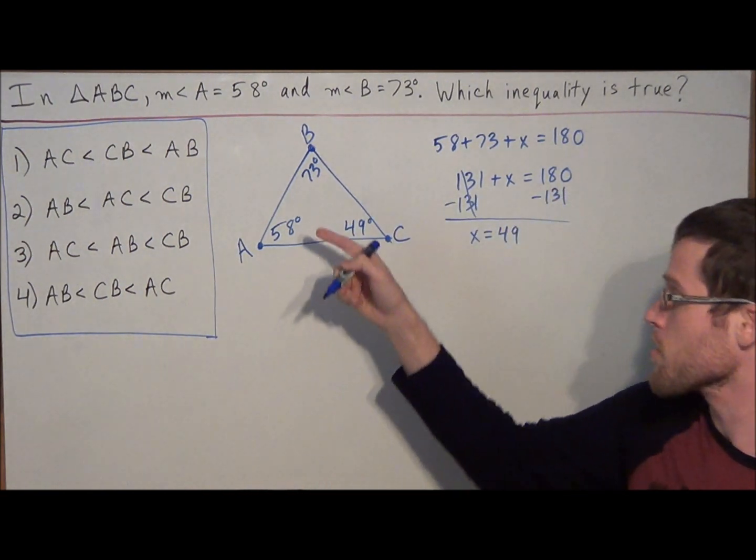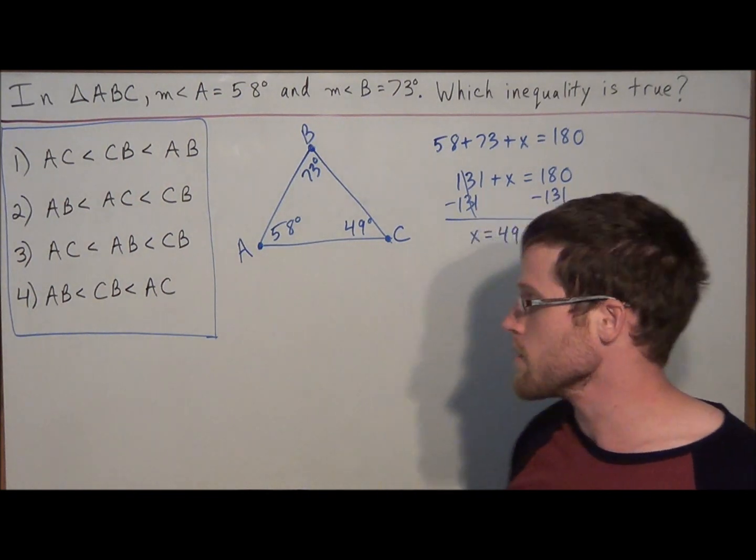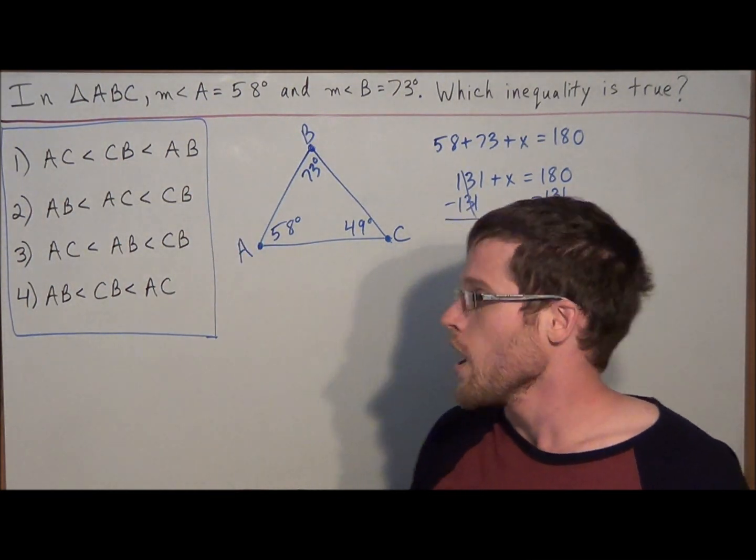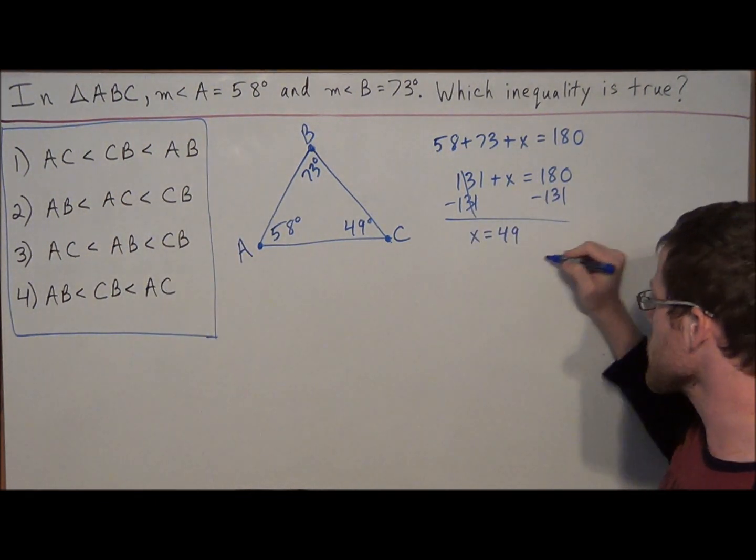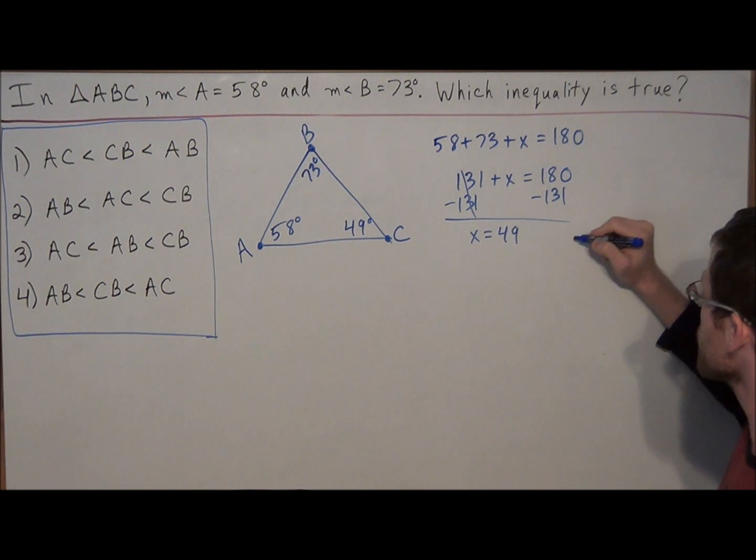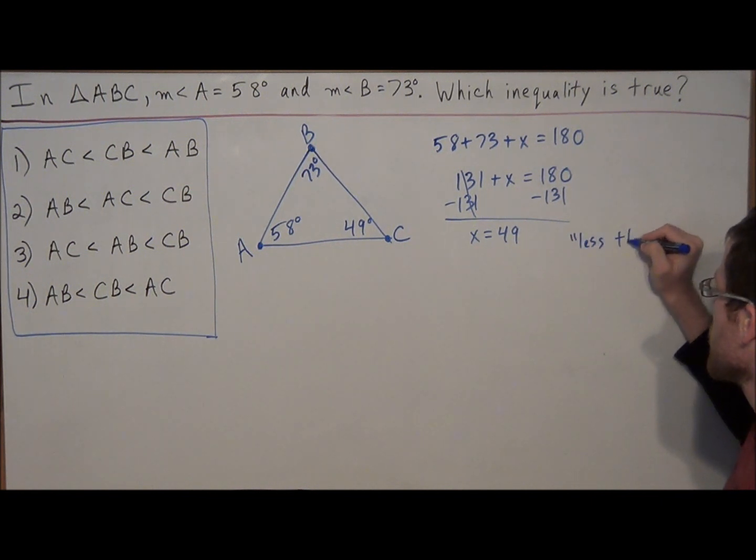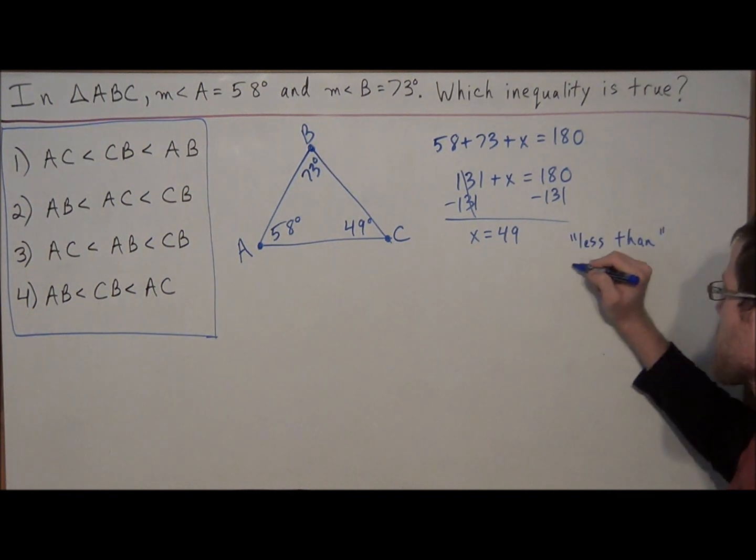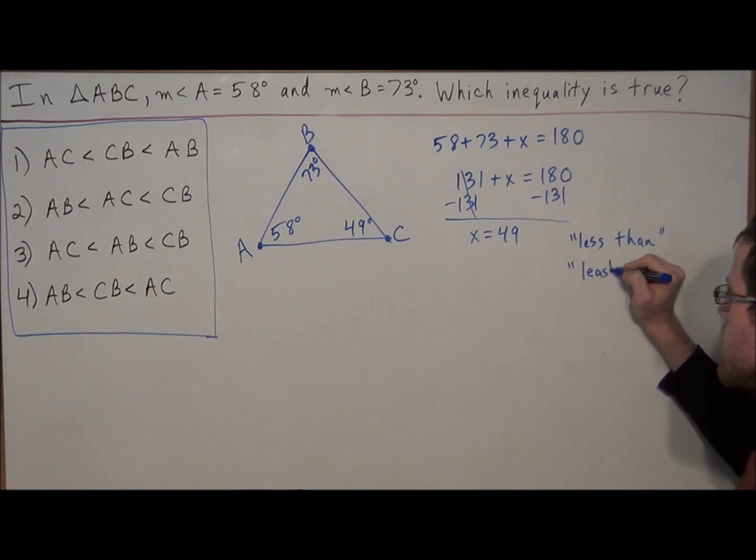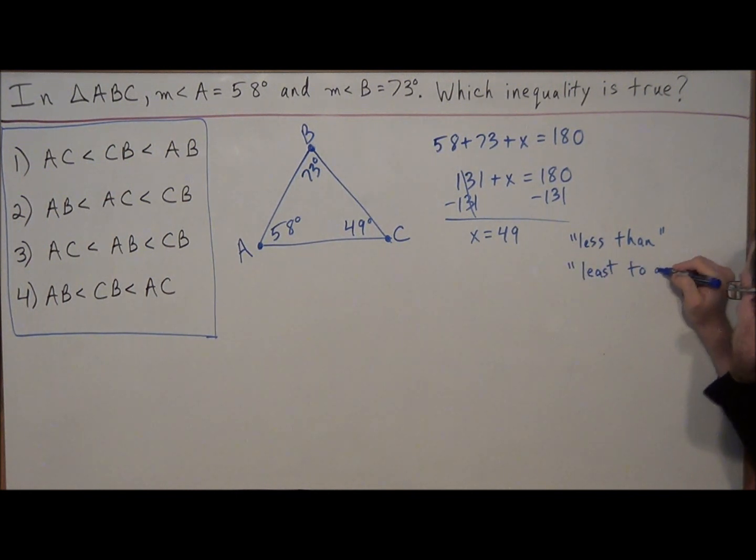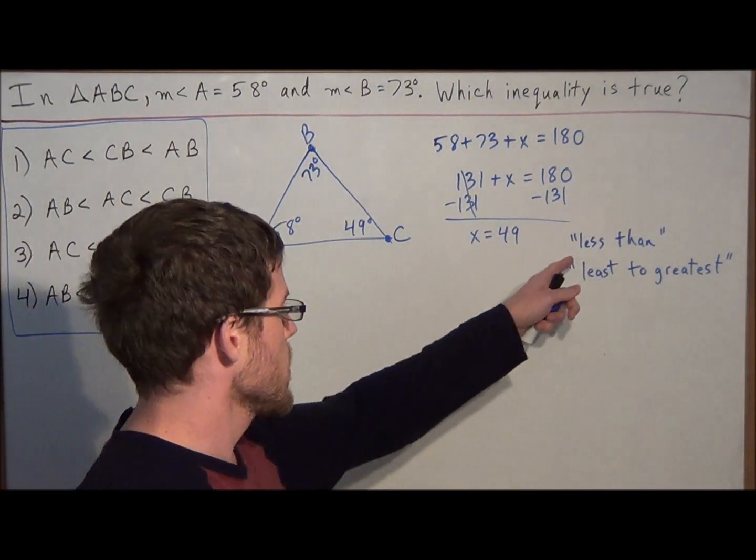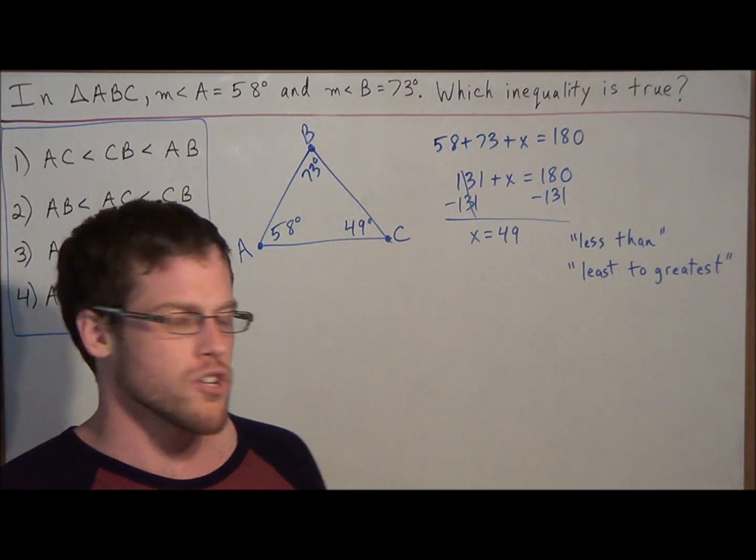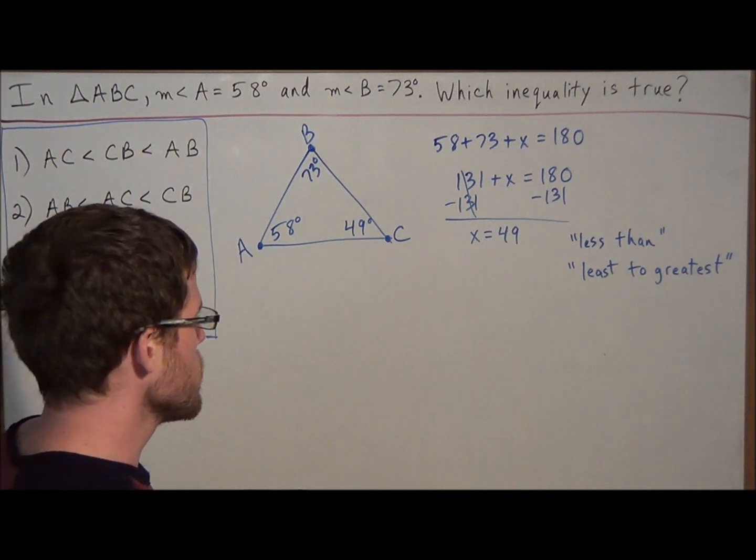So this is an important step, finding the measure of the three angles of the triangle. But next we look to our answer choices and notice that all of the inequality signs are less than. So this is telling us, this is just a helpful trick, that when you read less than, they ordered the sides from least to greatest. The key is to say the inequality out loud and since it's a less than sign for all the answer choices, less than should prompt you to think in terms of least to greatest.